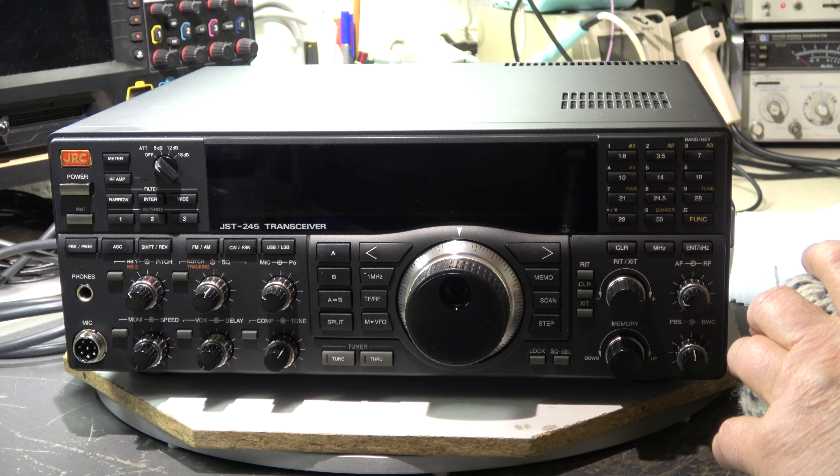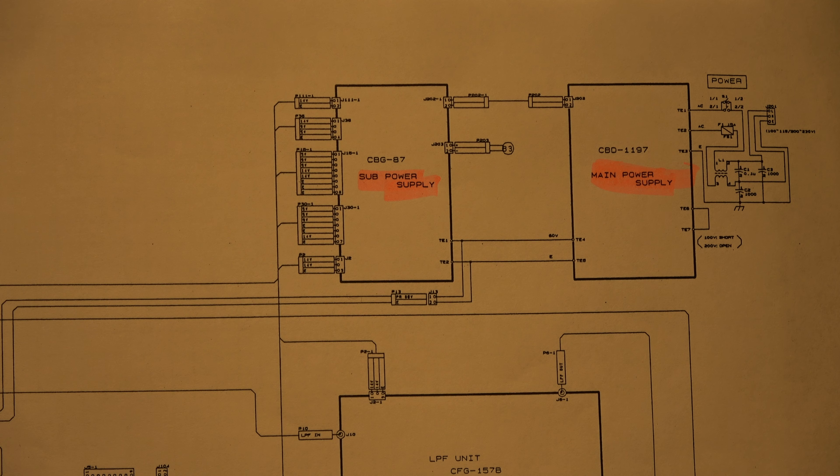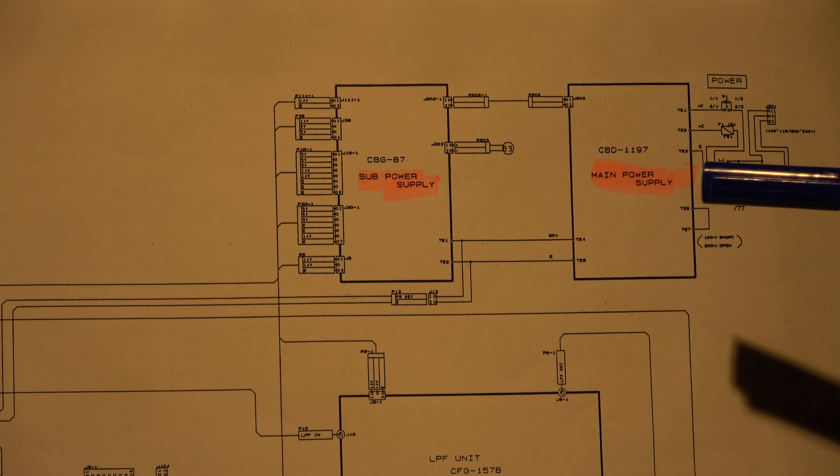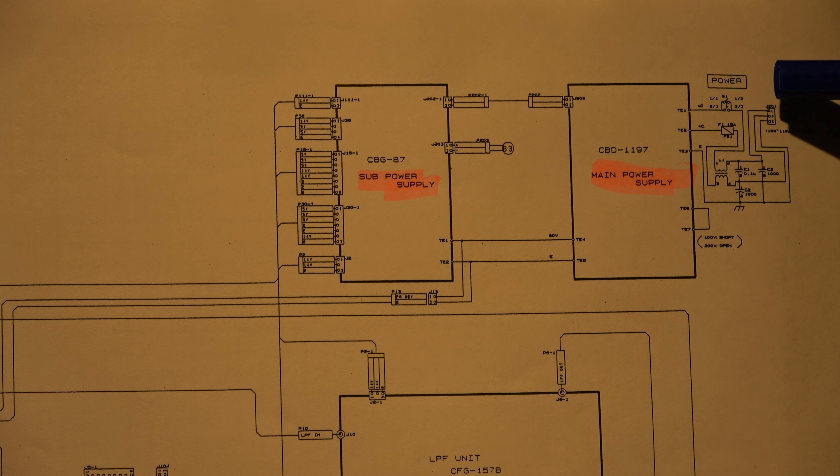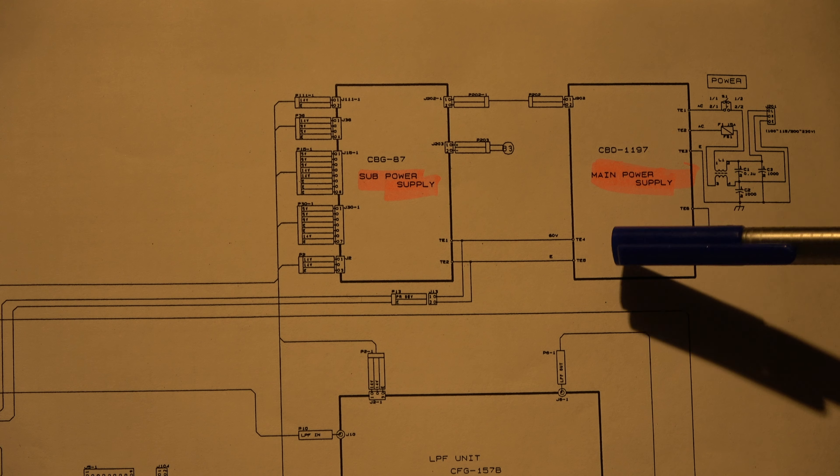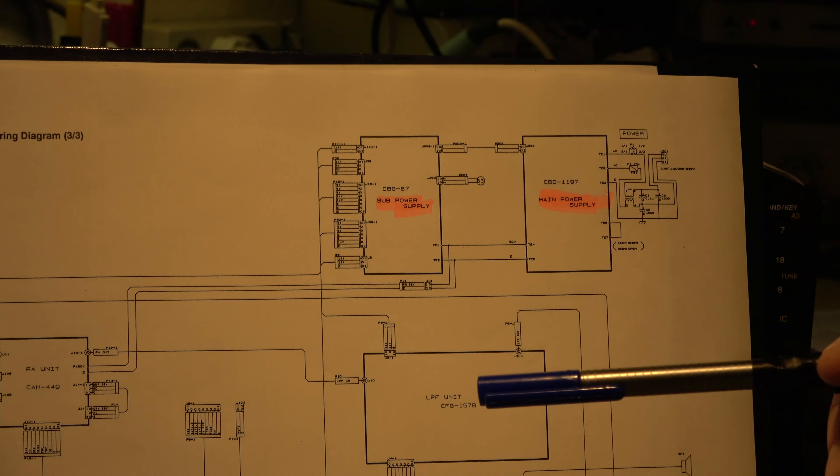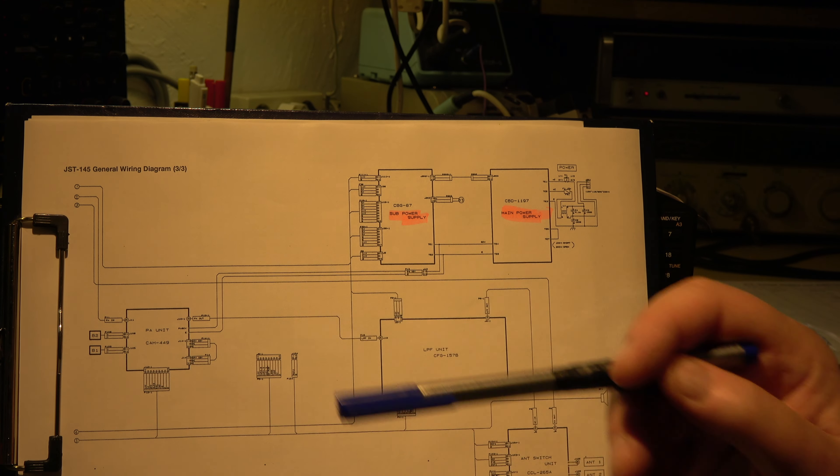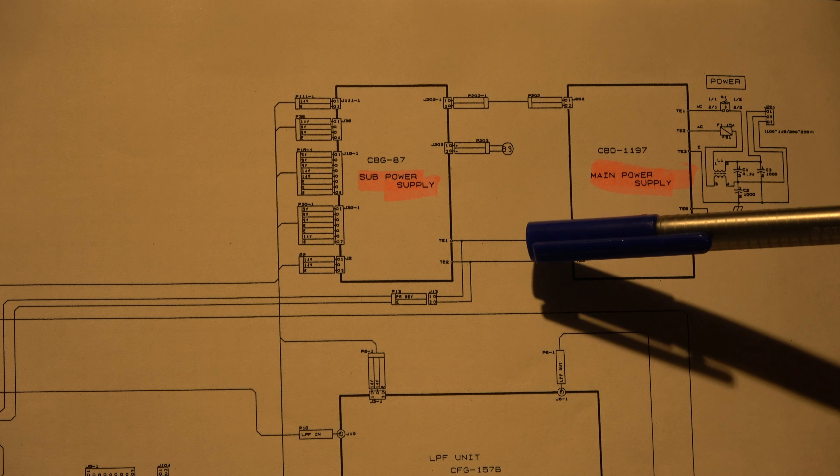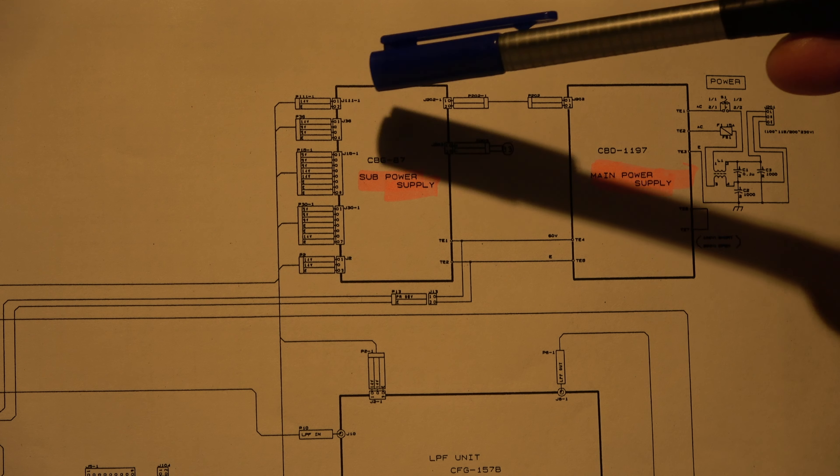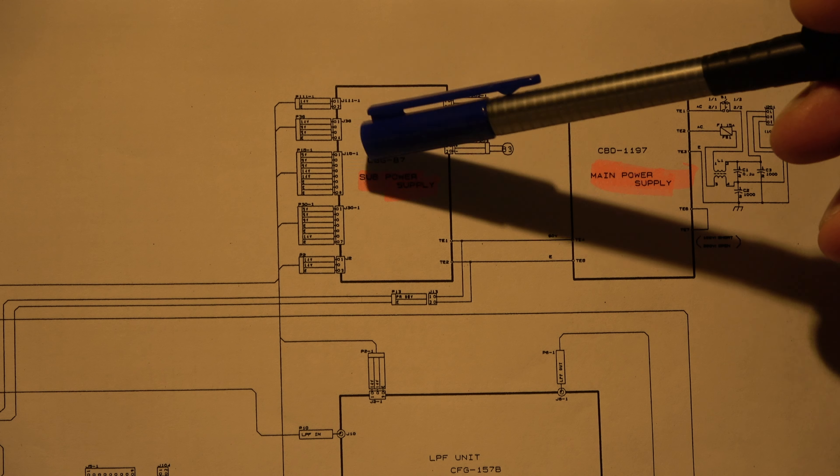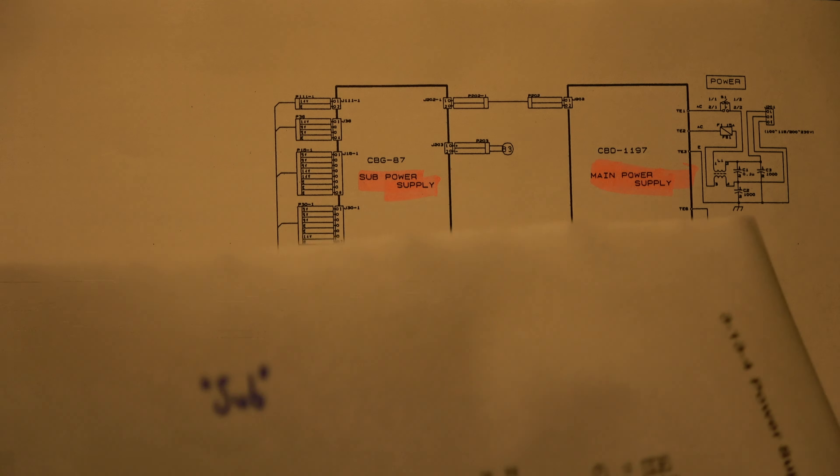We will first focus now on the power supply. This transceiver is an interesting concept. It has a main and the sub power supply, both are switched mode power supplies. The main power supply produces 60 volt with the AC input 220 or 110 or 115. The 60 volt output is fed to the PA, we can see it here, the PA unit, and it is fed to the sub power supply. The sub power supply generates some voltages from it: 13.8 volt, 9 volt and 5 volt, and these voltages are distributed here to several connectors.